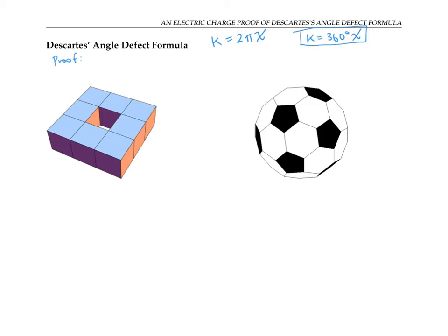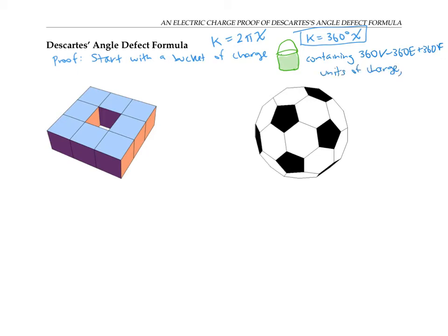This proof is an electric charge proof. I'm going to start with a bucket of charge containing 360V minus 360E plus 360F units of charge, where V is the number of vertices of my polyhedron, E is the number of edges, and F is the number of faces. In other words, my bucket contains 360 times chi, the Euler number, units of charge.